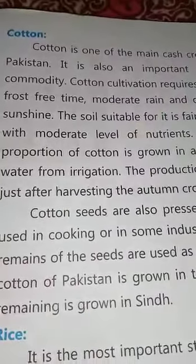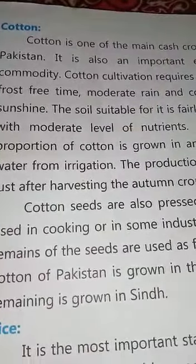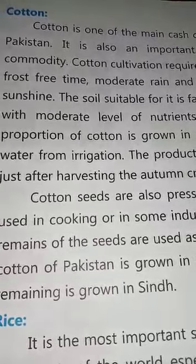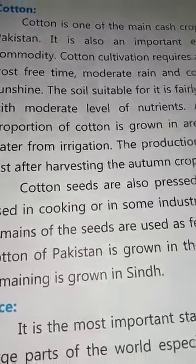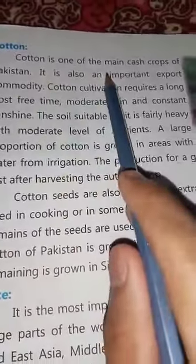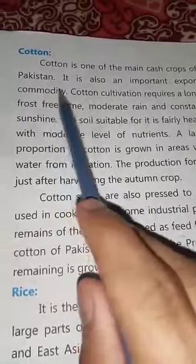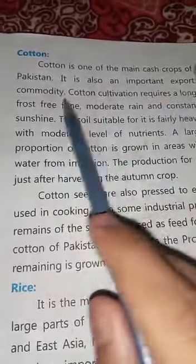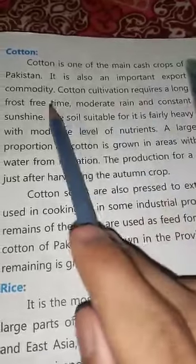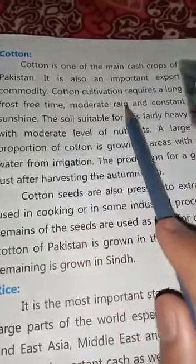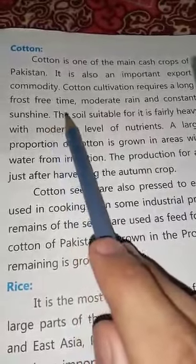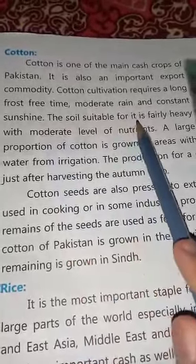Assalamu alaikum. For class social studies, we are covering chapter number six, starting from page number forty-one: Cotton. Cotton is one of the main cash crops of Pakistan and is also an important export commodity. Cotton cultivation requires a long frost-free period, moderate rain, and constant sunshine.